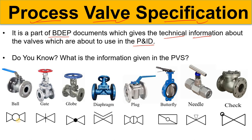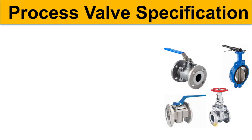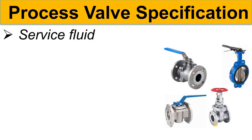If you know, let me know in the comments box. If you do not know, no problem — in this video we are going to discuss each specification one by one. When you prepare the Process Valve Specification, you will give some data. The first data is the service fluid — which type of service fluid you are going to use. In a line with a valve, there will be some flowing fluid that will also pass through this valve.